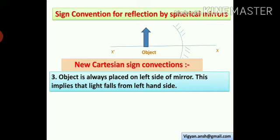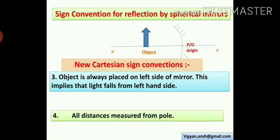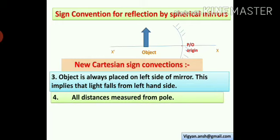So we will keep the object on the left side of the mirror. And why? When we have to measure anything on the left side of the mirror, then we will measure it from the pole. That is known as the origin here.